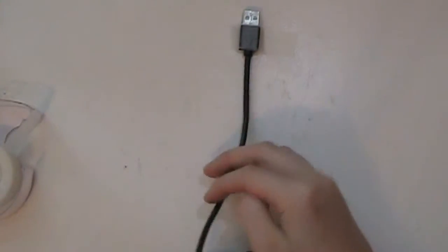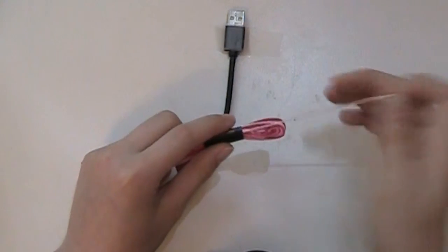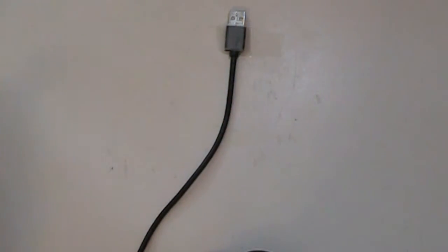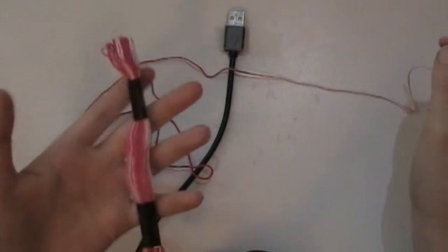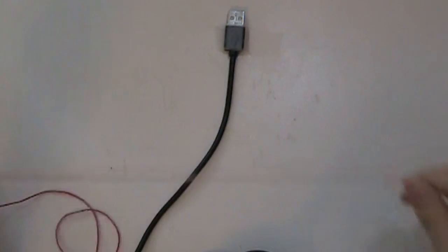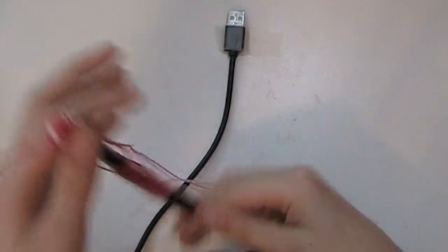This charging cord will act sort of as our middle strand of string. Next, you're going to want to take your embroidery floss, and depending on how long your cord is, you're going to need a lot of string. I'm not quite sure how much I'm going to need yet, so I'm not going to cut mine. I'm just going to leave mine in the little thingy, and we'll see how that goes.